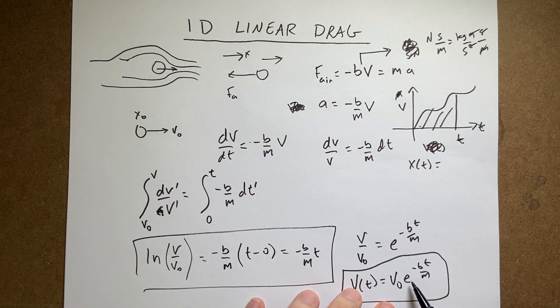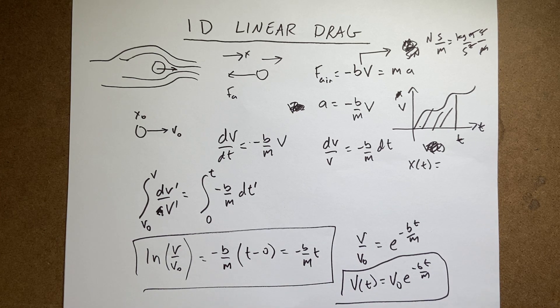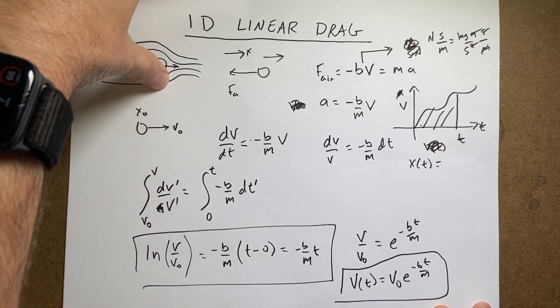Another check is what happens as T gets larger and larger and larger? Well, since this is to the negative power, this number gets smaller and the velocity decreases. So that's what we would expect. Okay, so I'm cool with that.